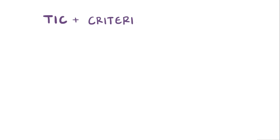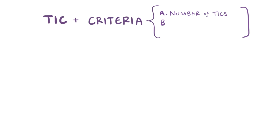In addition to having a tic, there are three additional criteria used to help classify individuals into one of the three types of tic disorders. Criteria A is the number of motor or vocal tics, Criteria B is the duration of the tic disorder, and Criteria C is the age of the person when he or she starts having tics.